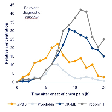In medicine, a biomarker can be a traceable substance that is introduced into an organism as a means to examine organ function or other aspects of health. For example, rubidium chloride is used as a radioactive isotope to evaluate perfusion of heart muscle. It can also be a substance whose detection indicates a particular disease state — for example, the presence of an antibody may indicate an infection.